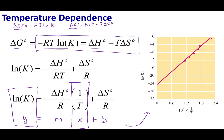When I look at the straight line, I can get valuable information. The slope M equals negative delta H over R. Depending on what the slope looks like, I can tell whether this is an endothermic or exothermic reaction. In this case, the slope is positive, which means delta H must be a negative value — so this is an exothermic reaction.